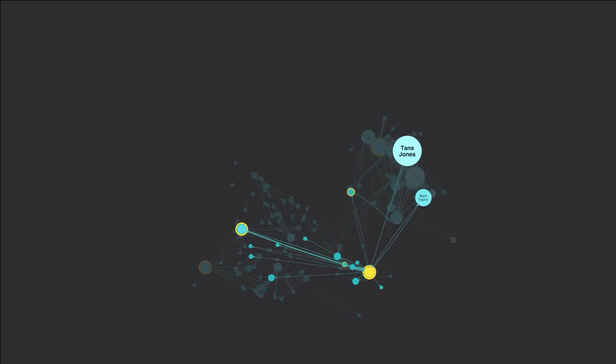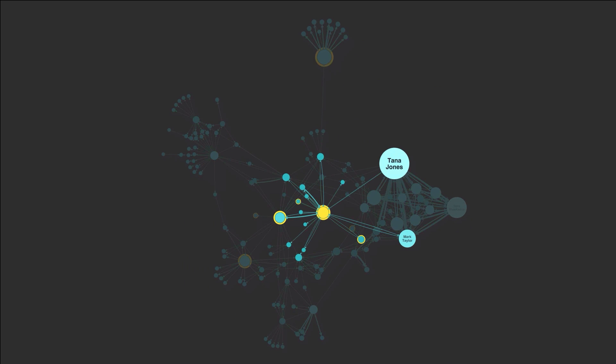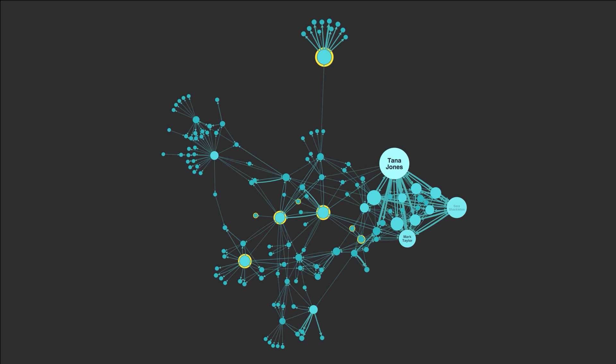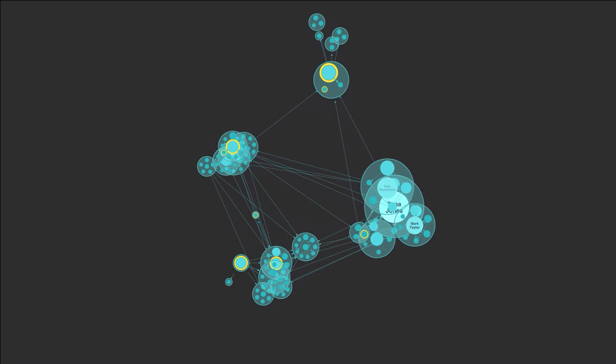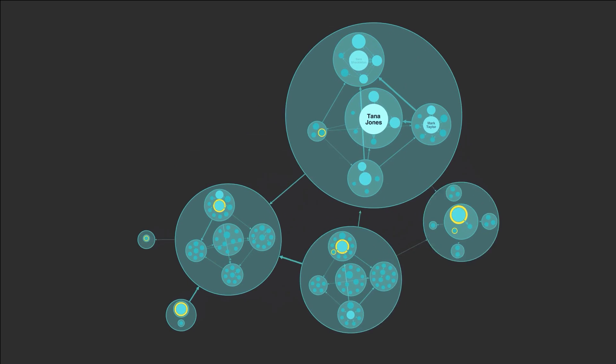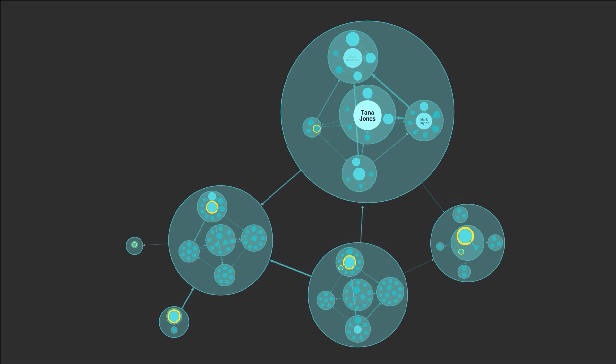Advanced graph algorithms make it easy for users to understand the most influential or important nodes in a network, and automated layouts reveal underlying data structures, outliers, or hierarchies.